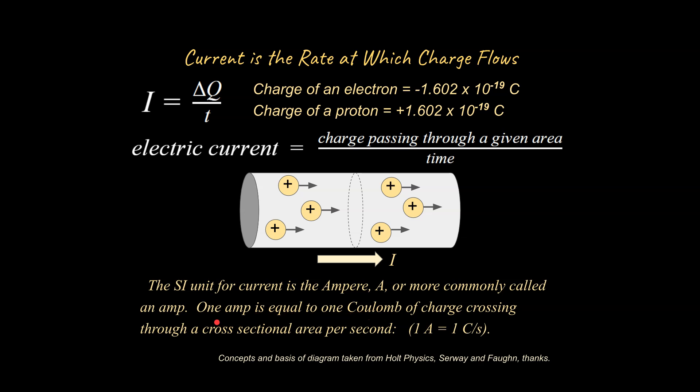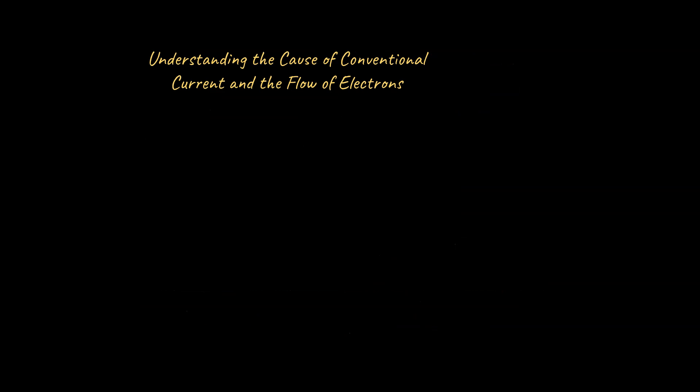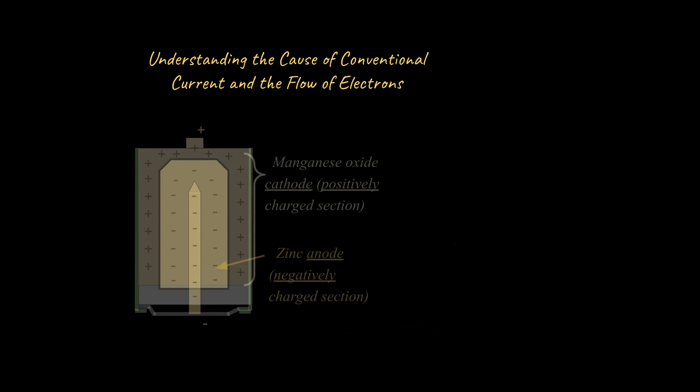So by definition, we would say one amp is equal to one coulomb of charge crossing through a cross-sectional area per second. So one amp is equal to one coulomb per second, and one amp is quite a lot actually. So it's a fair amount of charge passing through a cross-sectional area in a second. Alright, and well, let's build on that idea.